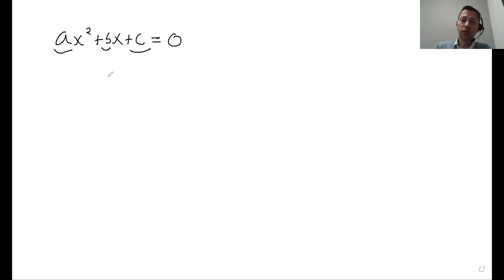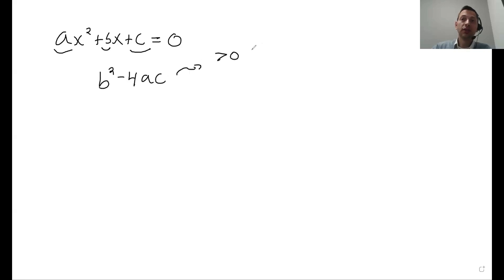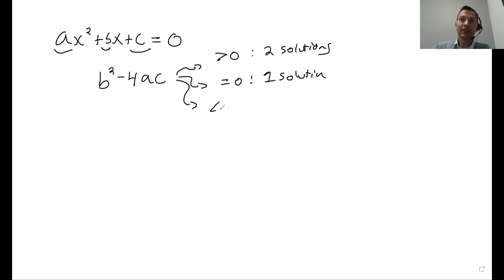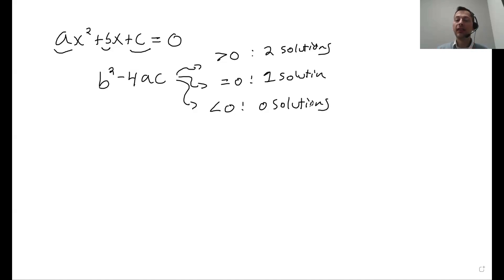The thing you need to know is: for the number of solutions of a quadratic equation, you can always get it by doing b² − 4ac. If that's greater than zero, you're going to have two solutions. If that's equal to zero, you're going to have one solution. And if that's less than zero, you're going to have no solutions.